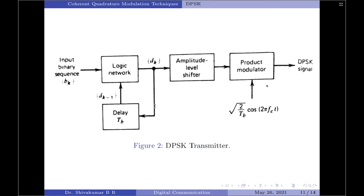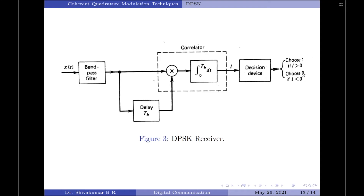Let us now move on to the transmitter and receivers of the DPSK system, starting with the transmitter. Figure 2 shows the DPSK transmitter block, which consists of a logic network, a one-bit delay element, an amplitude level shifter, and lastly a product modulator. The logic network and one-bit delay element are interconnected to convert the input binary sequence bk into a differentially encoded sequence dk. This sequence is then amplitude level shifted and fed to a product modulator, where it modulates a carrier signal to create the differential PSK modulated signal.